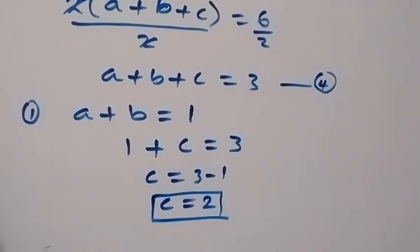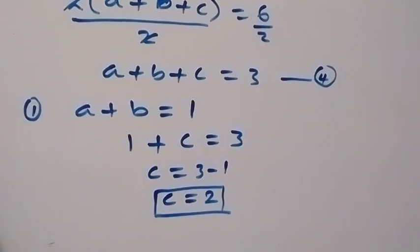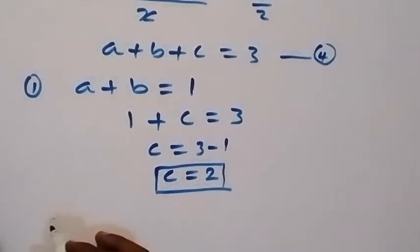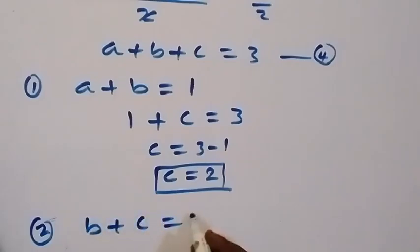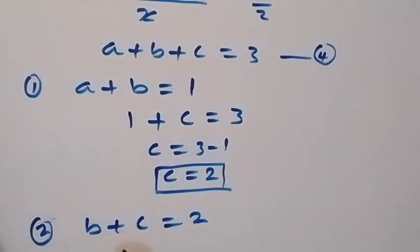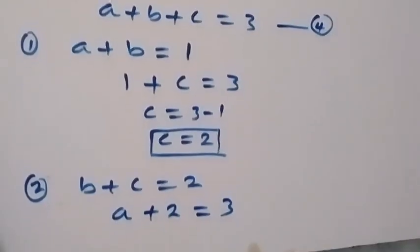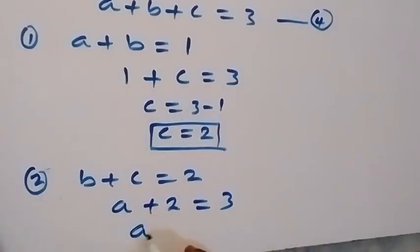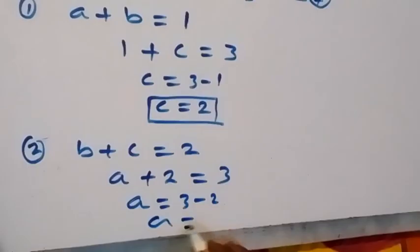And also, recall from equation 2 that we have b plus c to be equals to 2. And also, we can replace b plus c here in equation 4. So, b plus c will be 2. And therefore, we can say this is a plus 2 now equals to 3. And here as well, we can solve for here and say a equals to 3 minus 2. And here from here equals to 1.